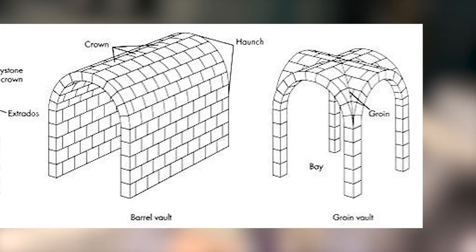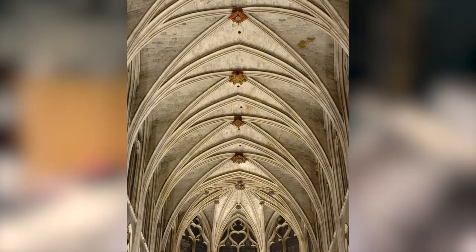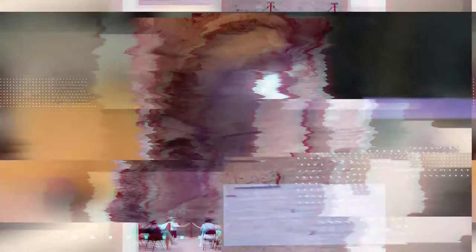By definition, a vault is a self-supporting arched form, usually of stone or brick, serving to cover a space with a ceiling or roof. Essentially, arched structures generate projections in 3D space — when the arches are extruded, it is known as a vault. They generally run in a horizontal direction and are a common feature in architecture from ancient Egyptian architecture to today.